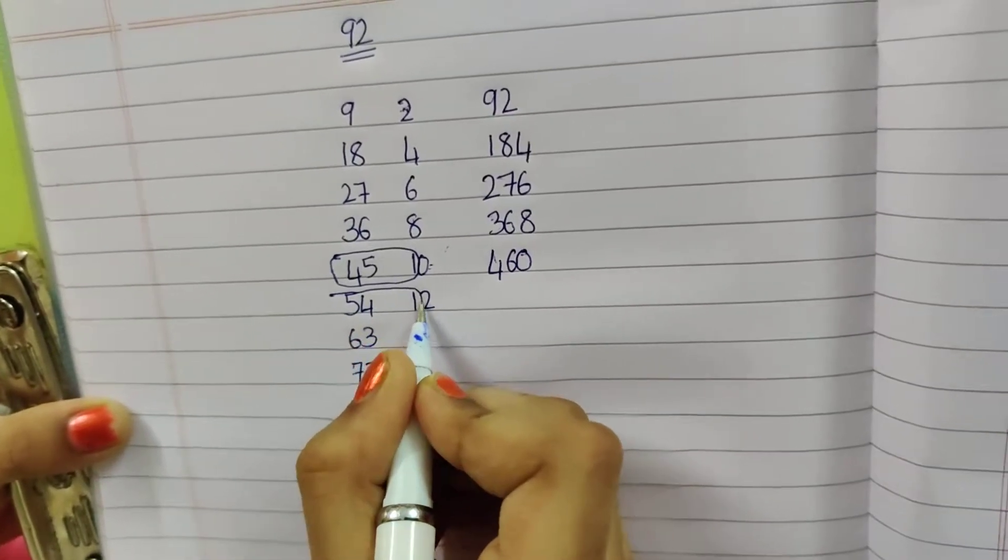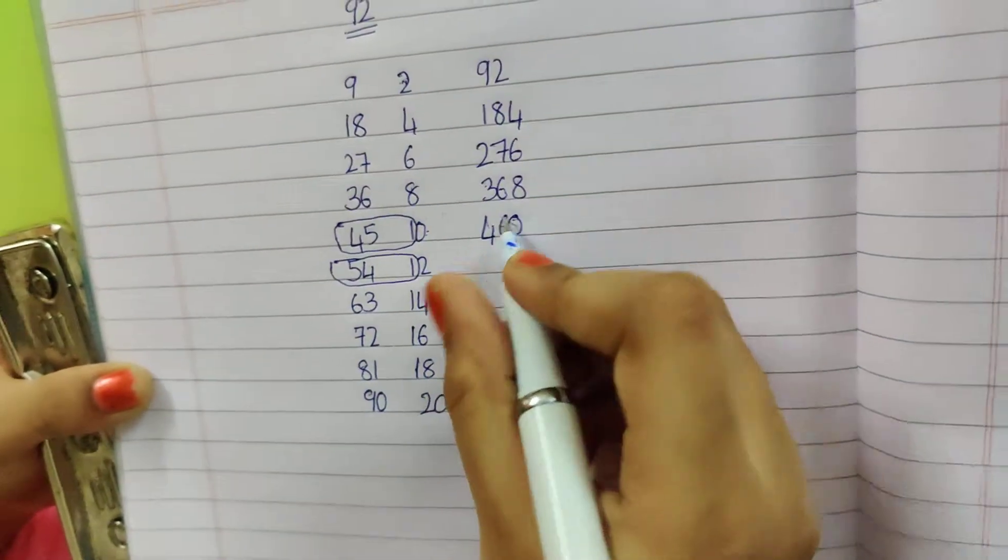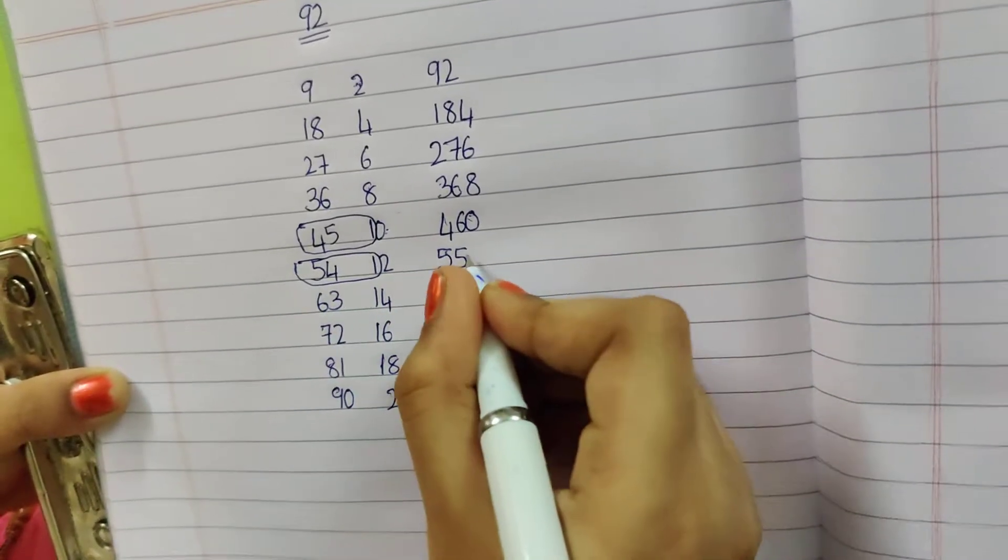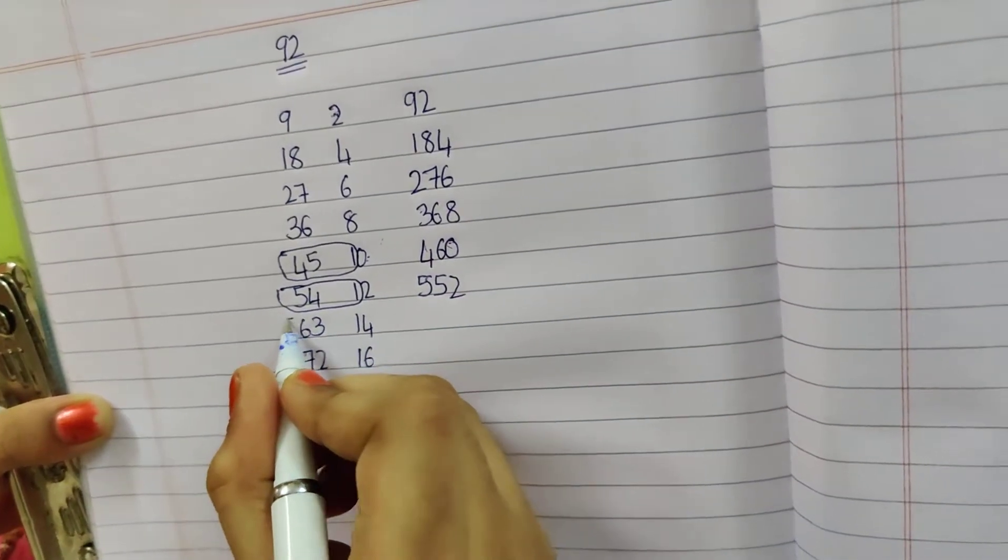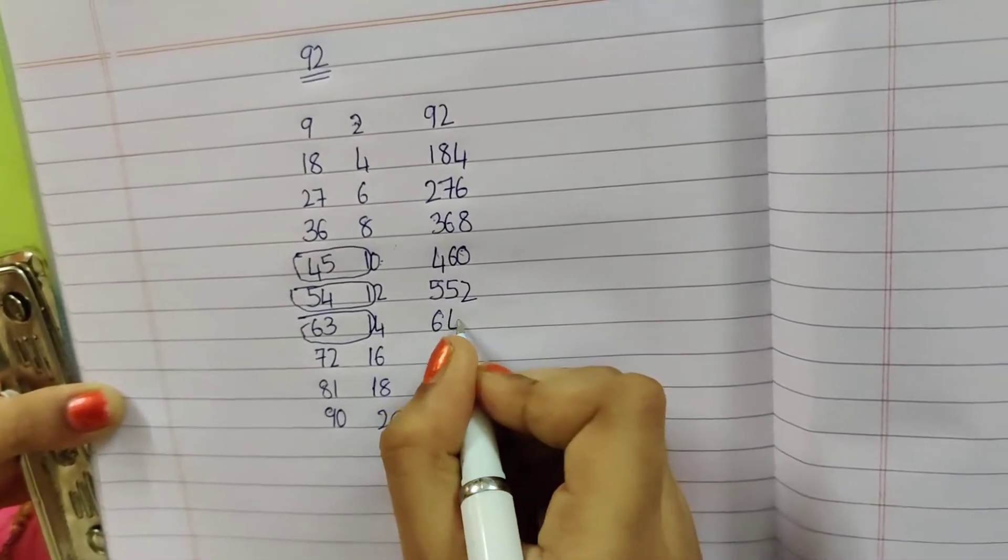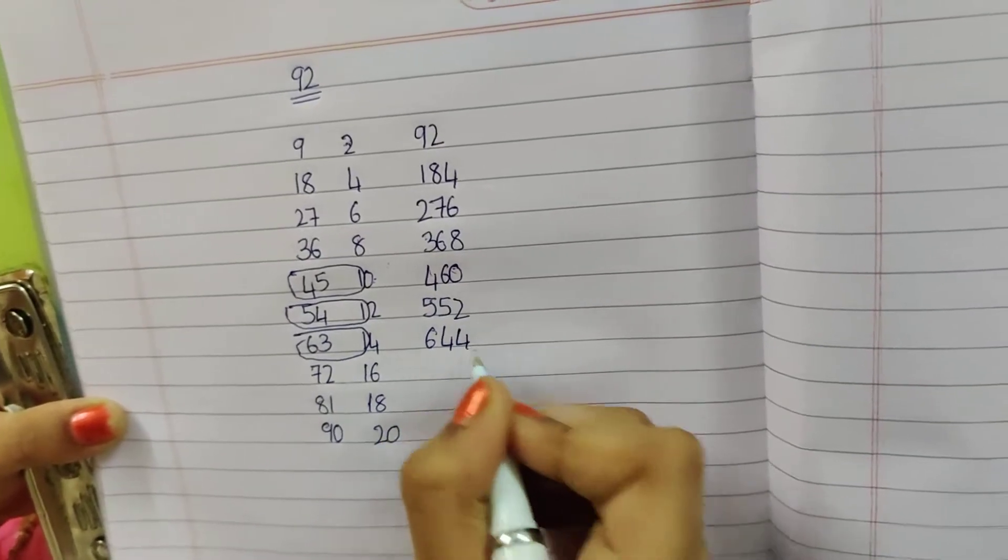54 plus 1, 55 and write 2. 63 plus 1, 64. Write 4 as it is.